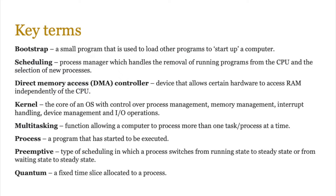Multitasking is basically the function of an operating system that allows a computer to process more than one task at a time. A process is basically a program that has started to be executed — the moment it is being executed by the CPU it is a process. Pre-emptive is a type of scheduling in which a process switches between states, and each process is allocated a fixed time slice called a quantum in pre-emptive scheduling.